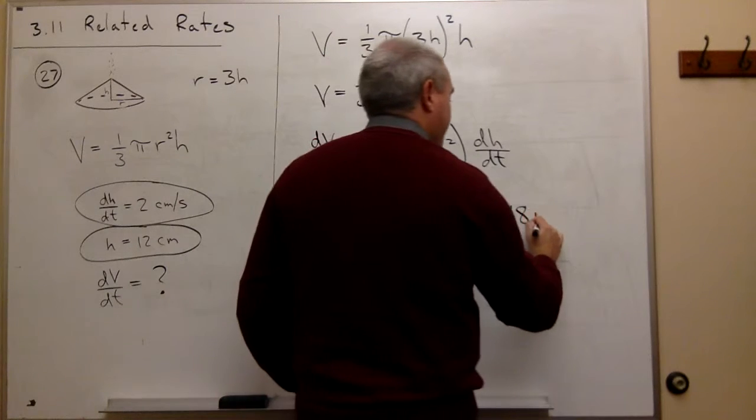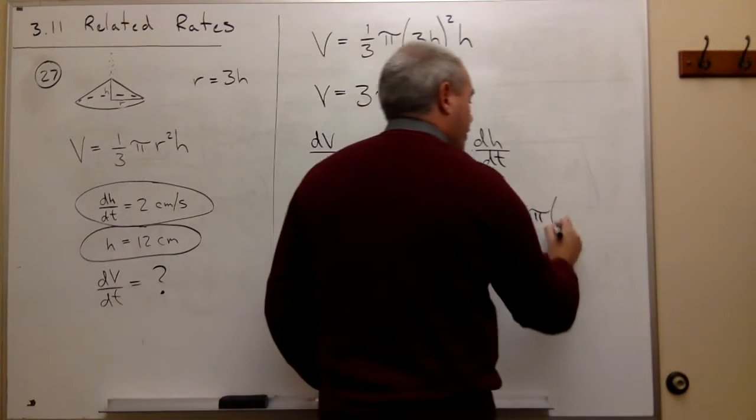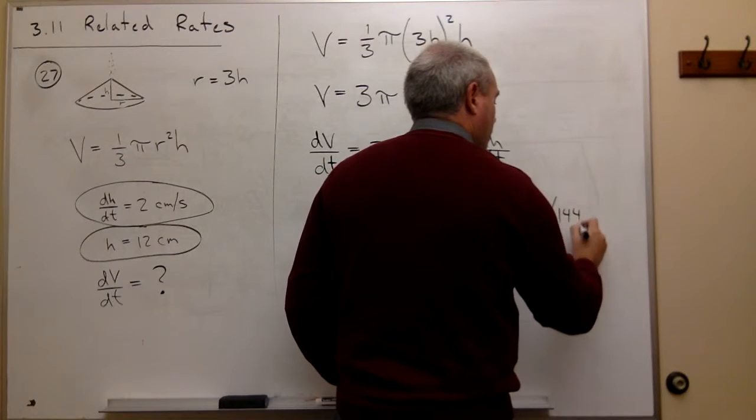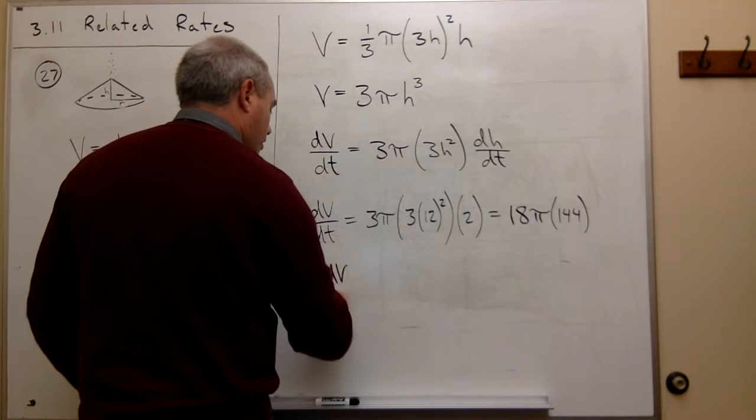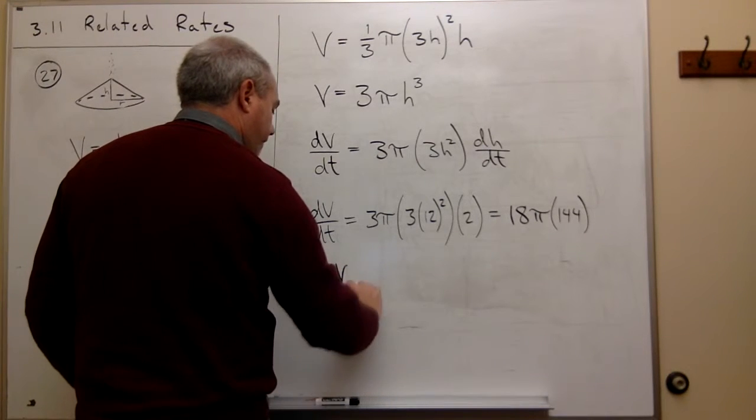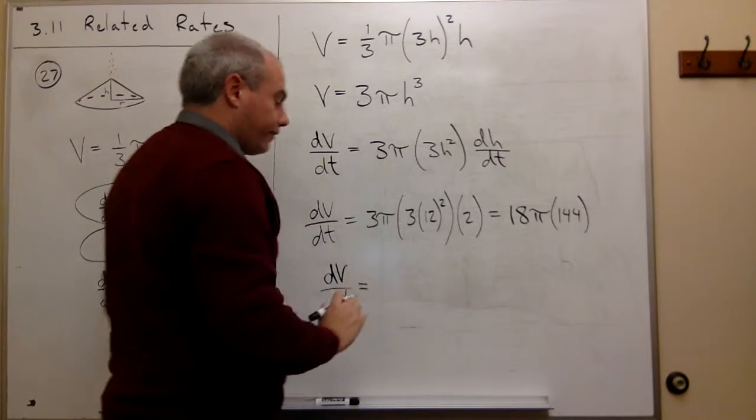times pi times 12 squared which is 144. So dV over dt is equal to 2592